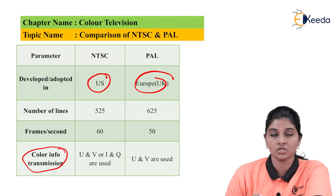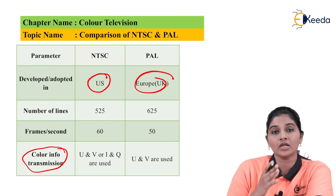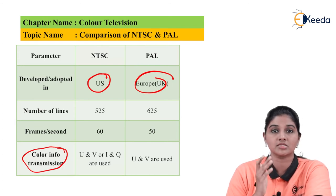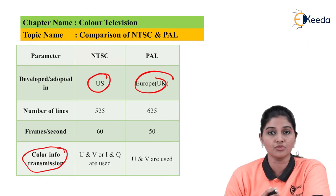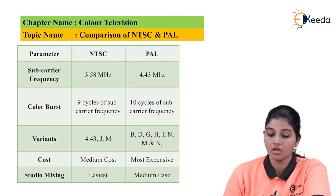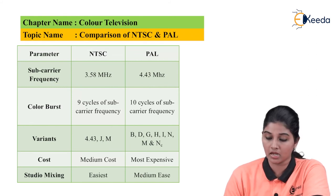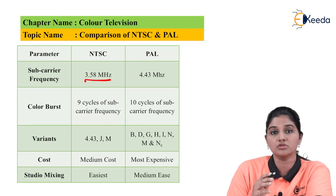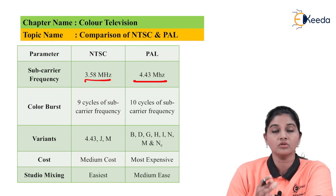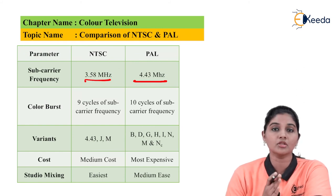For color information transmission, in case of NTSC the I and Q components are used — when we look at the block diagram of the NTSC encoder, using a suitable color matrix the RGB signal is converted into I and Q color components. In case of PAL, U and V are used. For subcarrier frequency, NTSC has a subcarrier frequency of 3.58 MHz whereas PAL has a subcarrier frequency of 4.43 MHz. These precise values allow easy signal recovery at the receiver and provide compatibility between the monochrome and color systems.